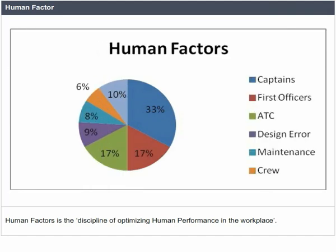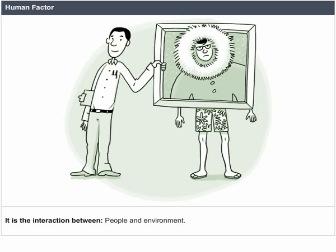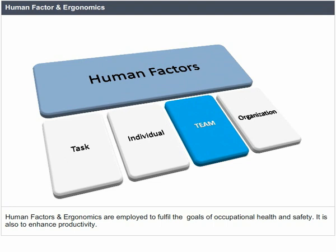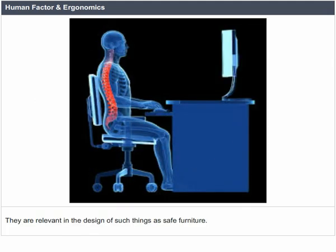Human Factor is the discipline of optimizing human performance in the workplace. It addresses the interaction between people and environment, people and procedures, people and machines, and people and people. Human Factors and Ergonomics are employed to fulfill the goals of occupational health and safety, and to enhance productivity. They are relevant in the design of safe furniture and easy-to-use interfaces for machines and equipment.